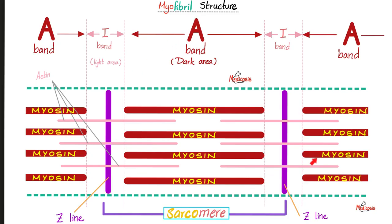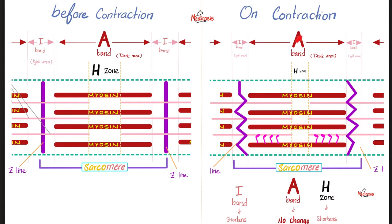Each skeletal muscle fiber contains fibrils, and each fibril is organized so that the area between two successive Z lines is known as the sarcomere. Upon contraction, the A band does not change in length; the I band will shorten, the H zone will shorten, the entire sarcomere will shorten, the entire muscle fibril will shorten, the entire muscle fiber will shorten, and your entire muscle will shorten, bringing the insertion closer to the origin.